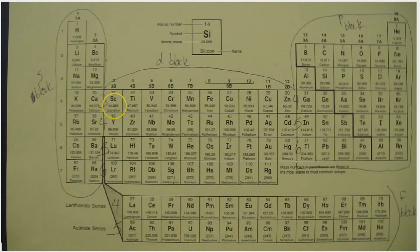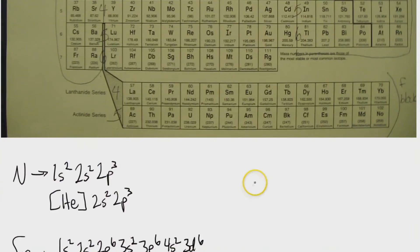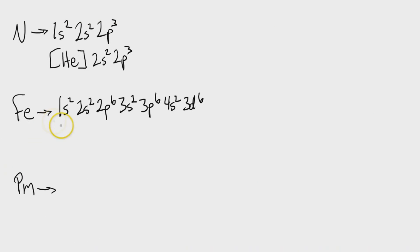Alright, now for the shorthand. So we're going to go backwards until we get to our previous noble gas, which in this case is argon. So we put argon in brackets, like so. And argon is 3p6, and so we just pick up where that leaves off with 4s2, 3d6.